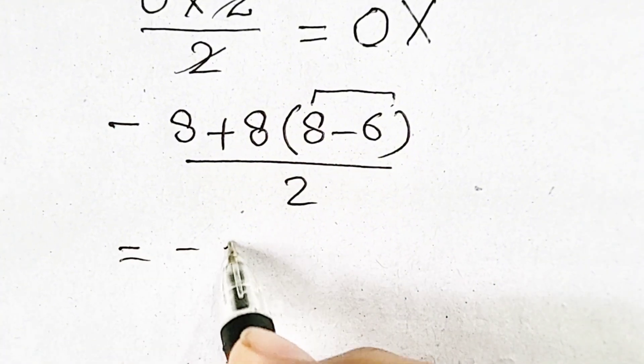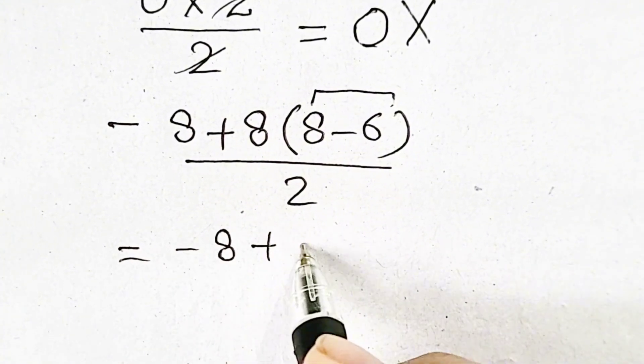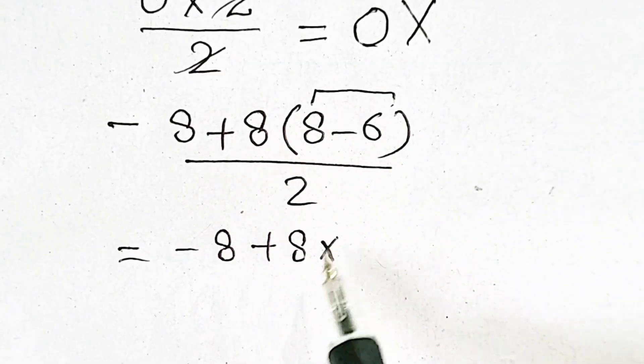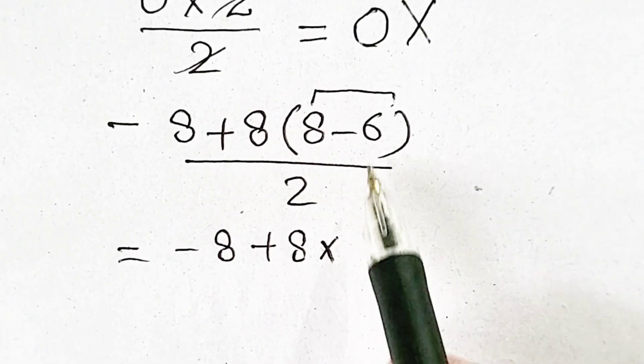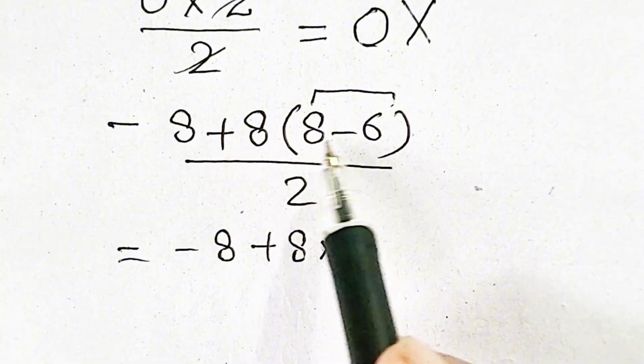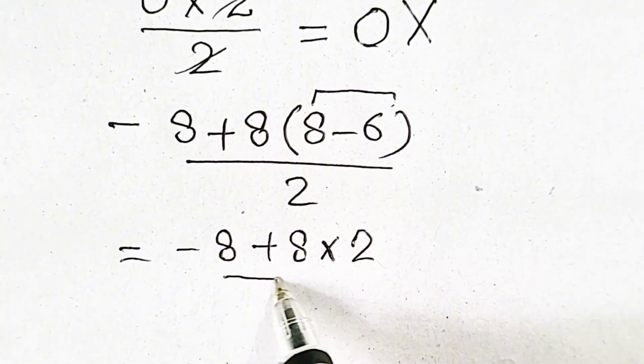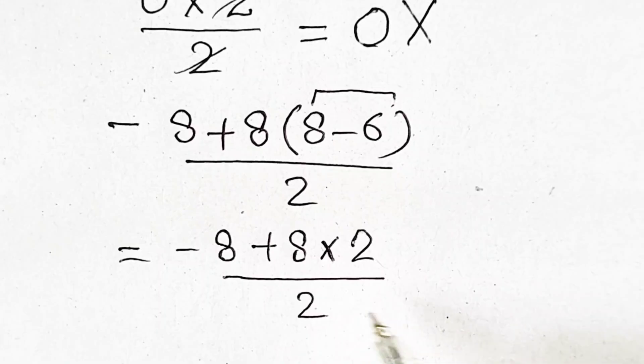We will get minus 8 plus 8 times, here is no symbol, so we will put multiplication sign. 8 minus 6 is in parenthesis, which will be equal to 2 divided by 2.